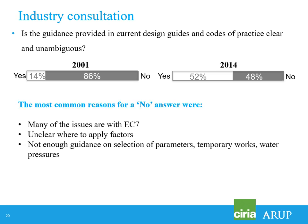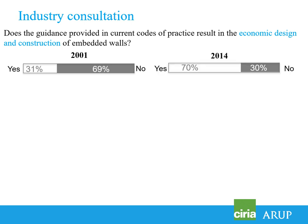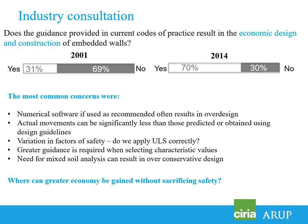The next question was: 'Does guidance in current codes of practice result in economic design and construction of embedded walls?' In 2001 it was roughly one-third yes to two-thirds no. By 2014, when Eurocode 7 was in place, those numbers had flipped around. In the UK the perception is that people don't think EC7 results in particularly economic designs, so this came as a real surprise. We had over 50 attendees from a broad range of backgrounds broken out into 10 groups helped by facilitators to report back discussions.